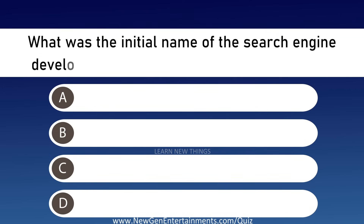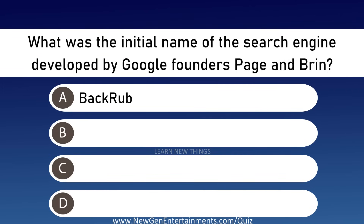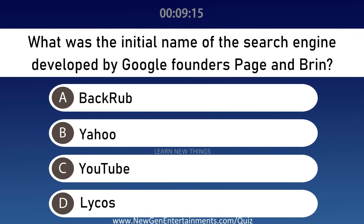What was the initial name of the search engine developed by Google founders Page and Brin? Options are A: Backrub, B: Yahoo, C: YouTube, and D: Lycos. Answer is Option A, Backrub.